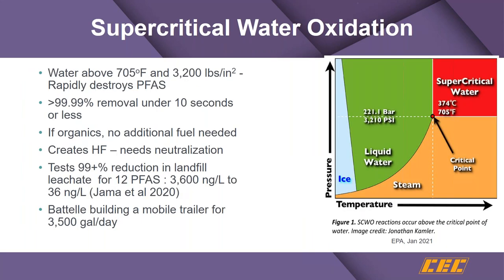Another technology that EPA is looking at is supercritical water oxidation — above 705 degrees Fahrenheit and 32 PSI — where PFAS constituents are rapidly destroyed. This technology is being investigated, and there is actually a company in Sweden that manufactures a containerized system. With a significant amount of organics, no additional fuel is needed to maintain those conditions, and tests have shown significant reductions in PFAS constituents.